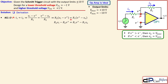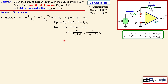Continuing the derivation: after working out the parentheses and collecting V+ terms together, we get (R1 + R2)·V+ on one side. Dividing everything by (R1 + R2) gives the expression for V+ in terms of VI (the input) and VO (the output), along with the resistor ratios R1 and R2. This is now the key equation we use to determine when the threshold transitions occur.